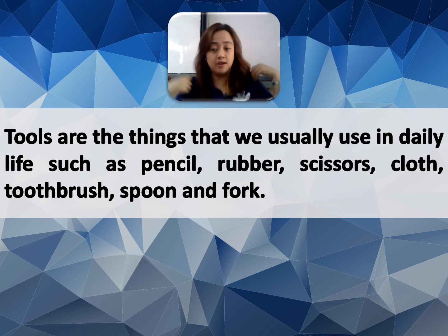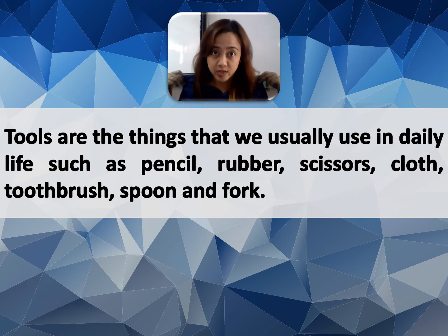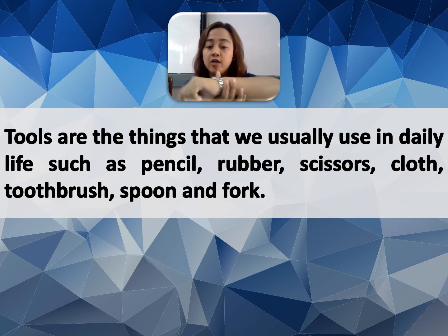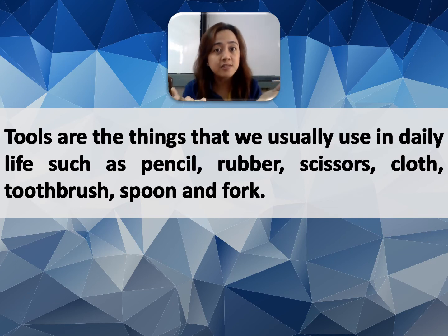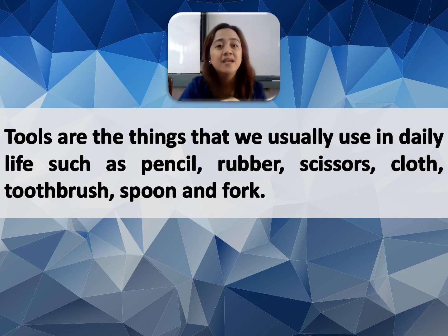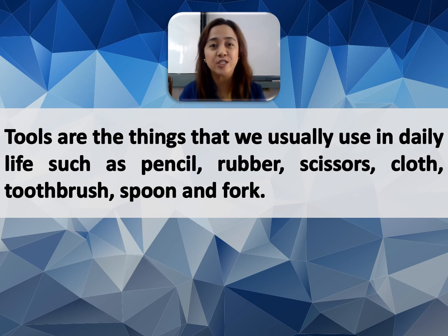For example, my cloth — of course, we use cloth every day in our daily life. My watch — I use it whenever I go to work. Plates, glass. Can you guess what else? Comb. Towel. Those are some examples of the tools that we use every day in our daily life.